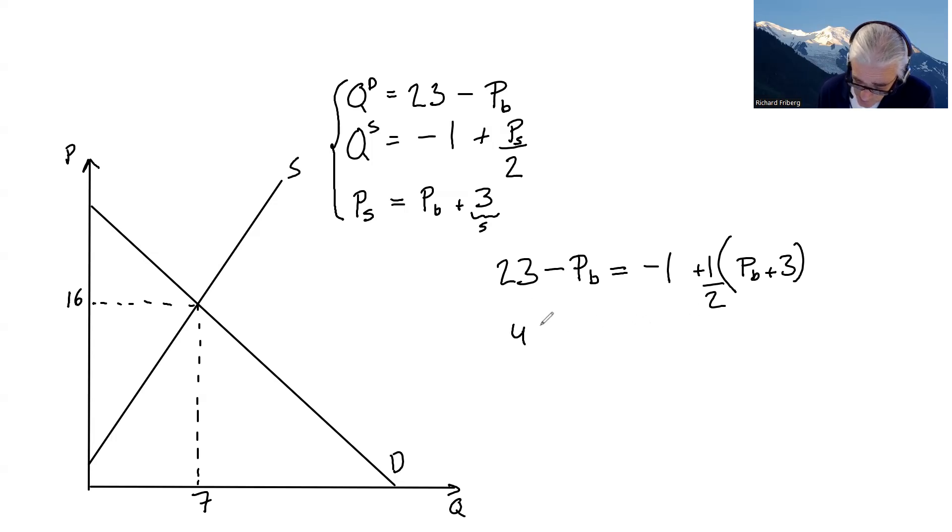We want to solve for P_b here. Multiply up the 2, 46 minus 2P_b equals minus 2 plus P_b plus 3. Collecting terms, 3P_b equals 45 or P_b equals 45 divided by 3 which is 15.